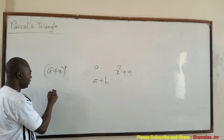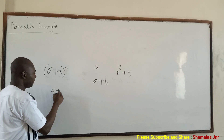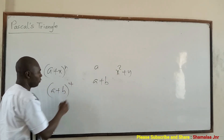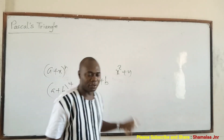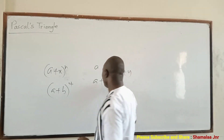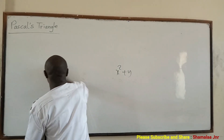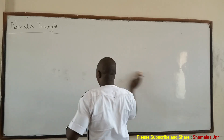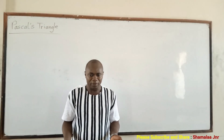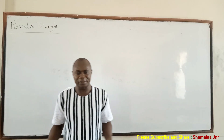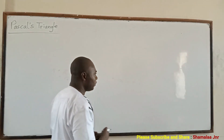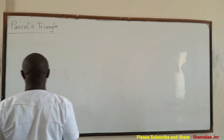For example, when you have (a + b) all raised to the power 4, how do you use Pascal's triangle to solve this? Now, Blaise Pascal — a French philosopher, physicist, and mathematician — his triangle is given as follows.